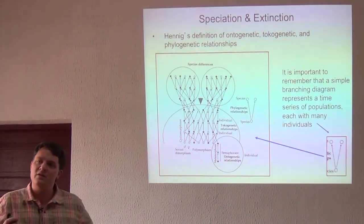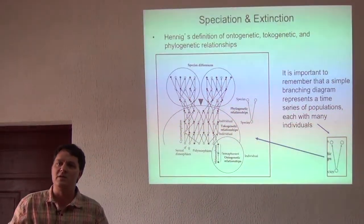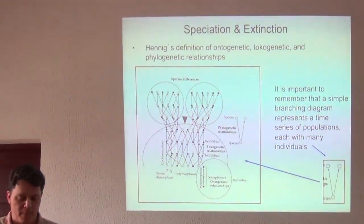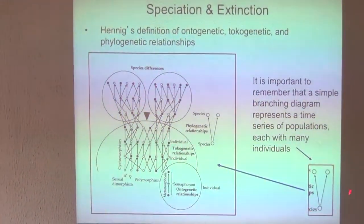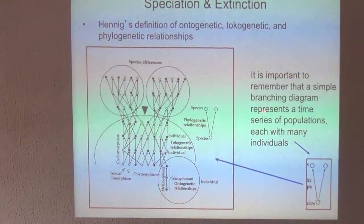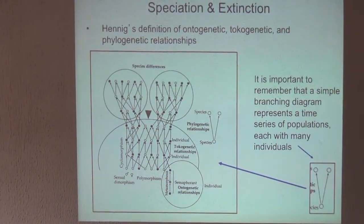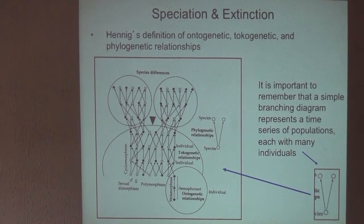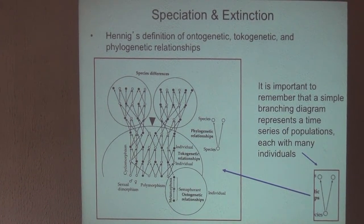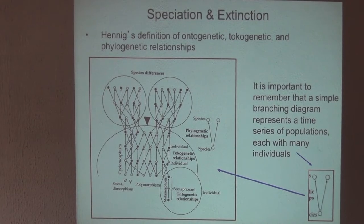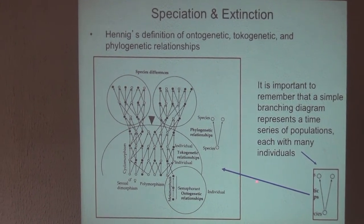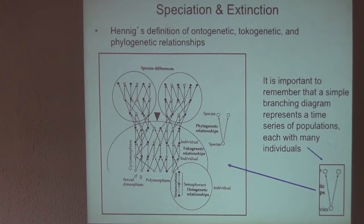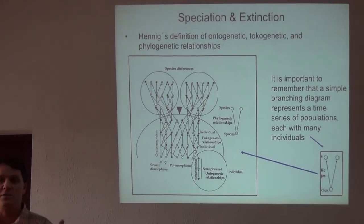Even then, he was getting very deep into the philosophy of divergence and how we represent species on trees. Many of our ideas have changed since then, but even then he was focused on this simple thing. It's important to remember that a simple branching diagram represents a series of populations in that slowly diverging clade. We see it on a tree as just a fork in a phylogeny, but that fork is really a series of metapopulations — populations that are interacting with each other up to a point, and then that interaction stops.